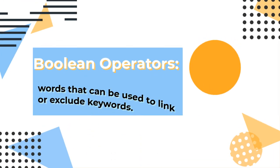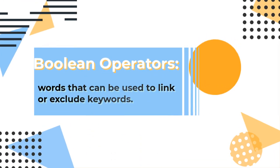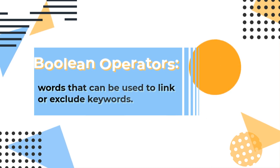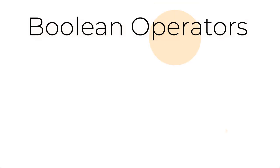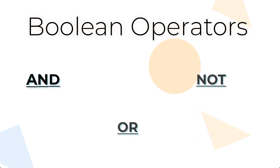Boolean operators are words that can be used to link or exclude keywords. When used in library databases, Boolean operators can make each search more precise and can save time. The most common Boolean operators are the terms AND, OR, and NOT.